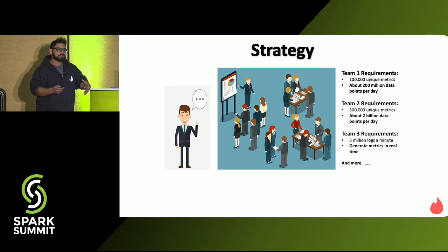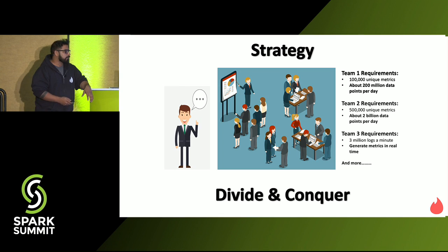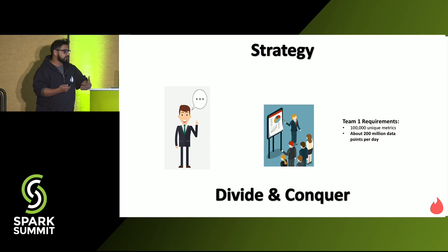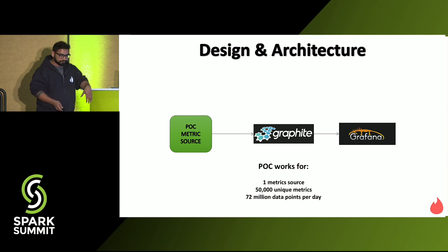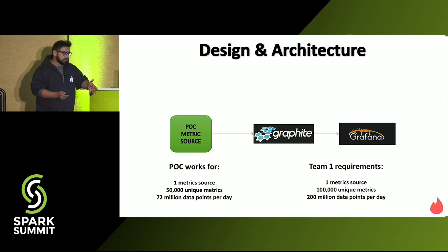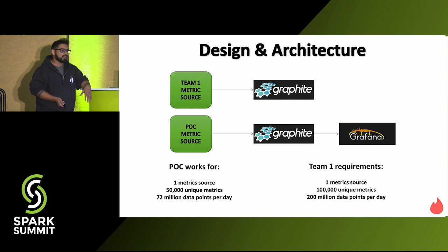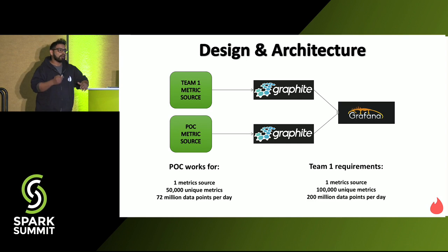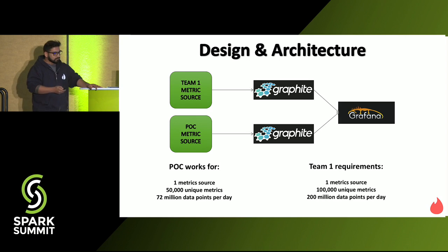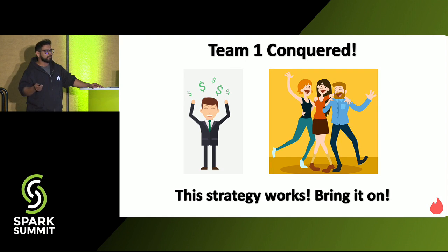What he did was go back to his school days where he was taught the strategy of divide and conquer. He chose to tackle the first team at least and try to satisfy them. He looked at their requirements and considered whether his POC architecture could handle them. Because Grafana supports multiple data sources, he brought in another layer — the team's metric source and Graphite — and attached the same Grafana to it. Now you have a combined visualization layer with metrics coming from different sources on the same platform. Team one was conquered, everybody was happy.